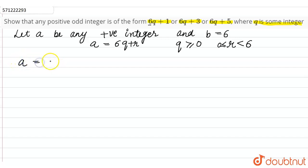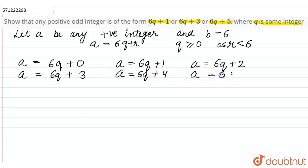So a equals 6q+0 (first case), or a equals 6q+1 (where r is 1), a equals 6q+2 (where r is 2), a equals 6q+3, a equals 6q+4, and a equals 6q+5.